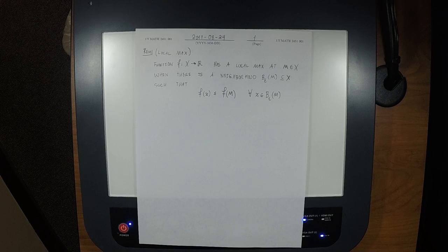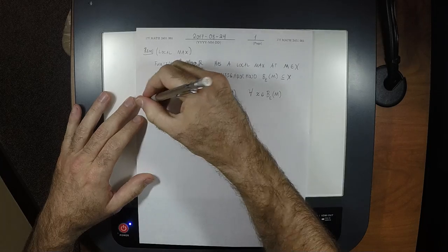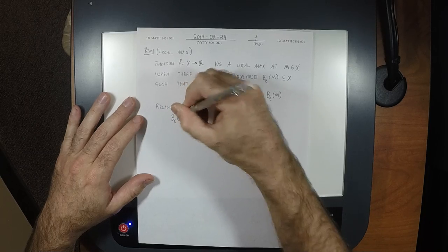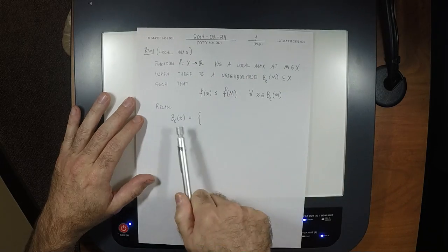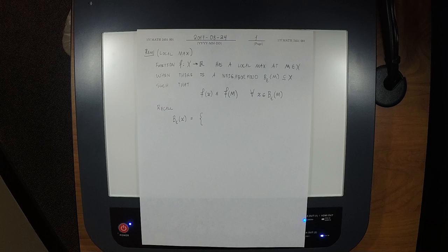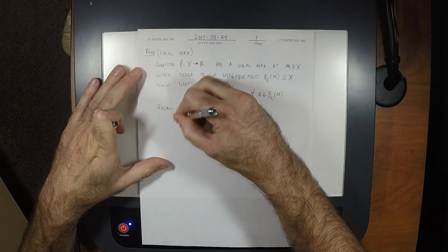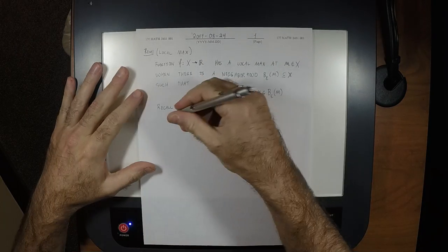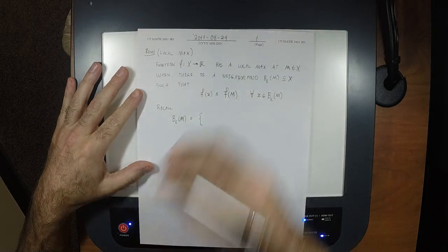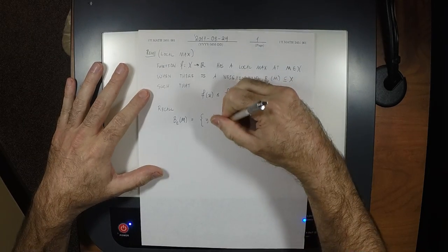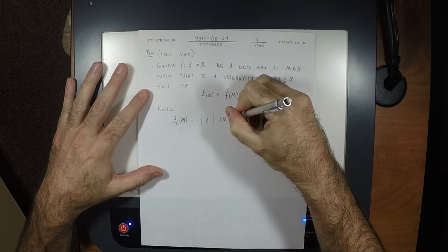We need to know what a neighborhood is. B-epsilon of M is the set of all y such that the absolute value of M minus y is less than epsilon. That's a convoluted way to say something actually pretty simple.